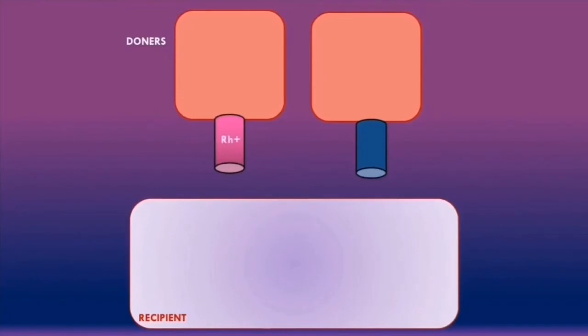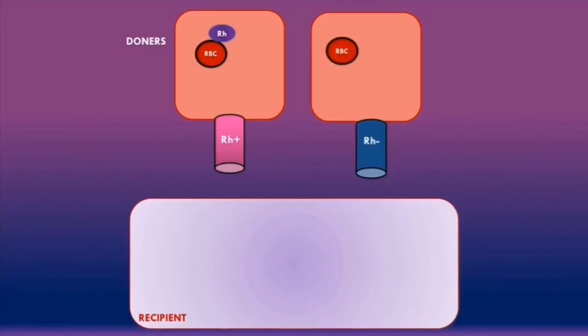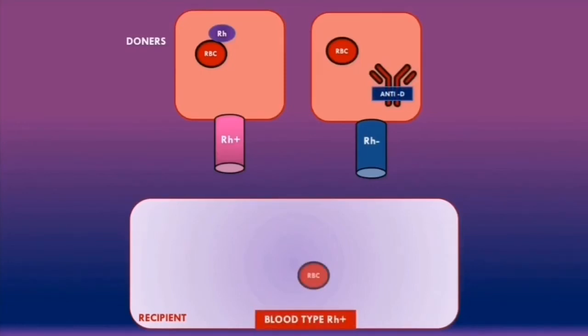Let's now discuss rhesus compatibility in blood transfusions. Rhesus positive blood means the red blood cells have the rhesus D antigens but there are no anti-D antibodies. Rhesus negative blood means the red blood cells do not have the rhesus D antigens but there are anti-D antibodies. A recipient who is rhesus positive has red blood cells with rhesus D antigens but no anti-D antibodies.